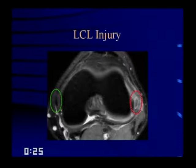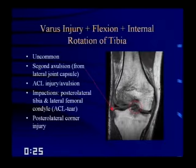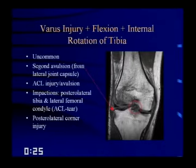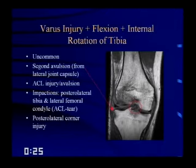A varus injury with flexion and internal rotation of the tibia is very uncommon, but causes the Segond avulsion fracture — a little avulsion by the lateral joint capsule off the proximal lateral aspect of the tibia. You'll see impactions on the posterolateral tibia and lateral femoral condyle, just like with a pivot shift ACL injury. The predominant bone bruises are the same as those seen with any ACL injury.